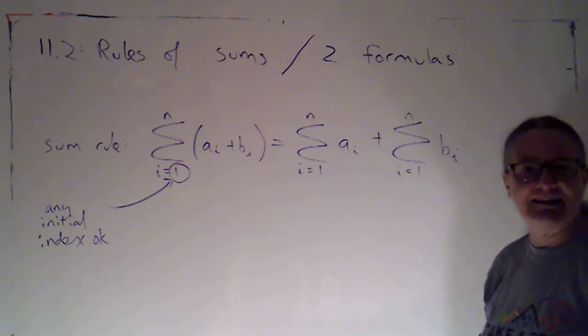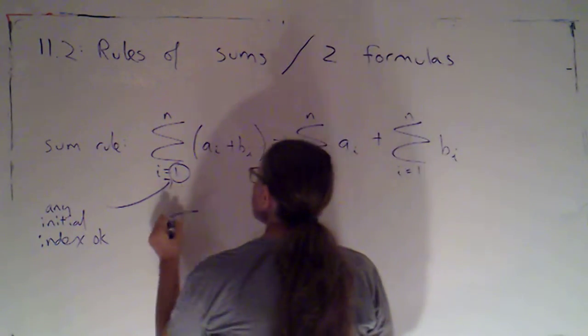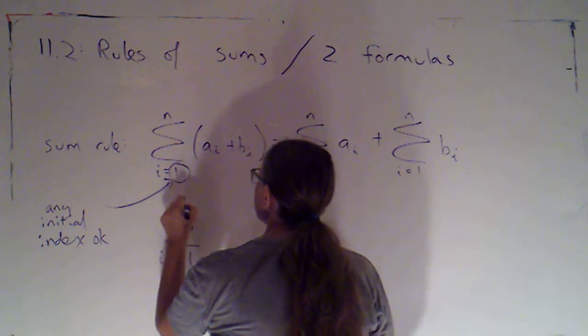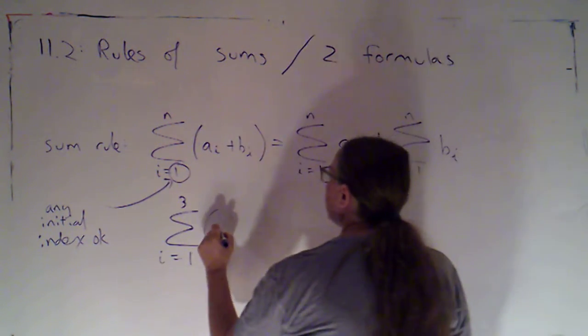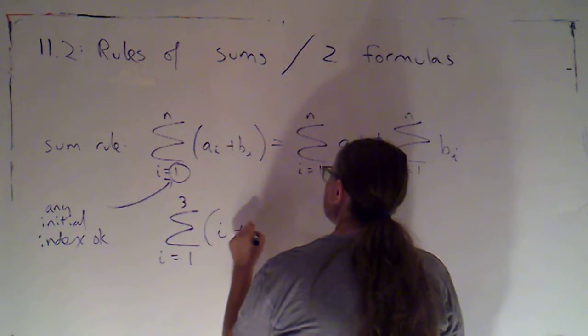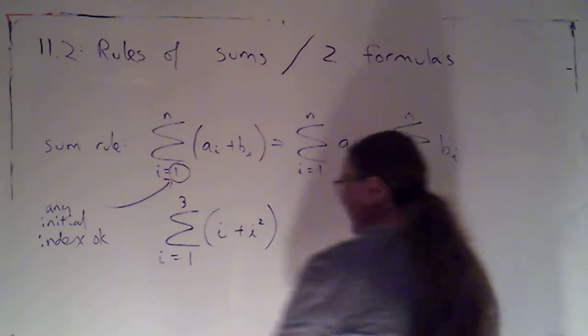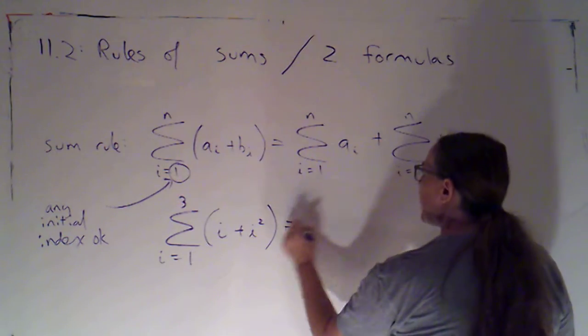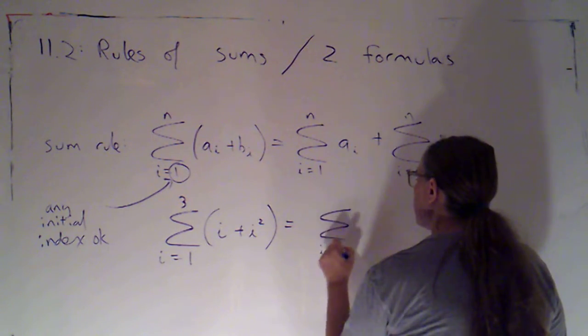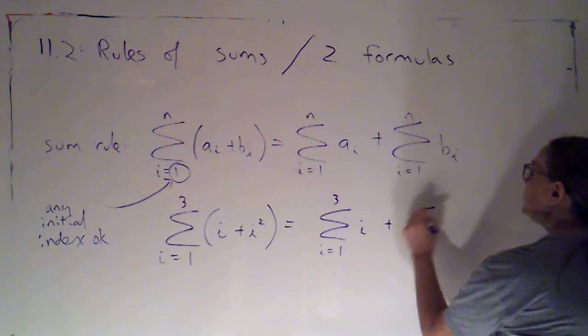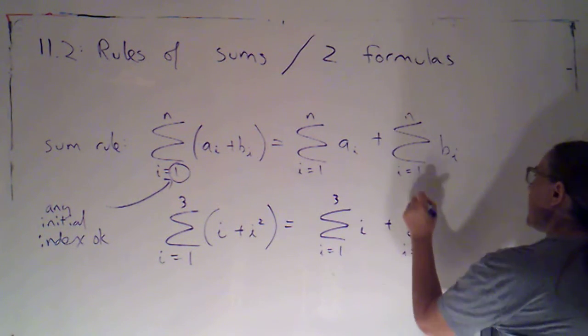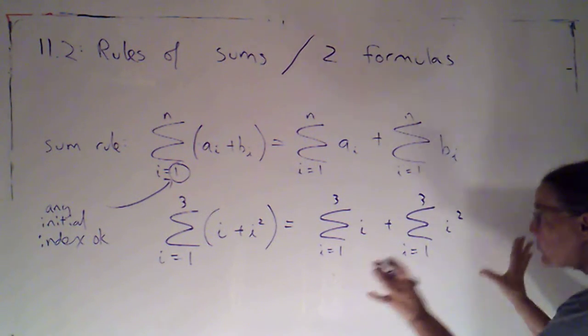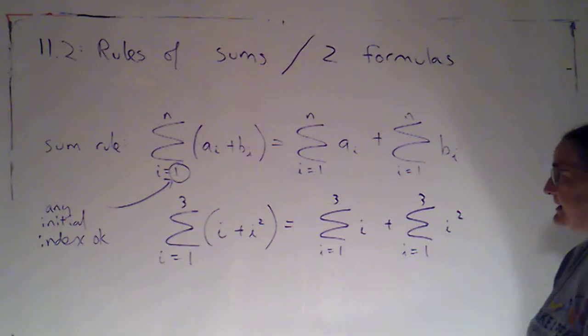What I'm going to do is just work out an example so that we can see that. So let's suppose that I was doing the sum as i goes from 1 to 3 of i plus the sum as i goes from 1 to 3 of i squared. So I'm just going to write out both of these sums.